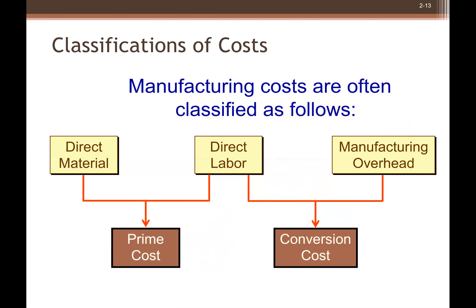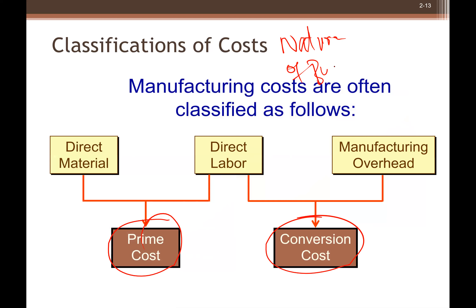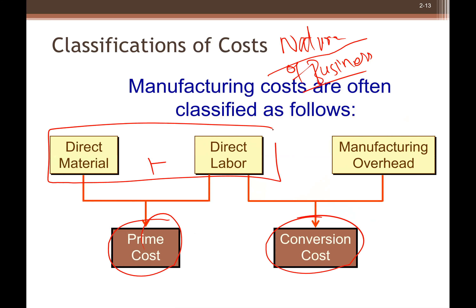To summarize: in manufacturing terms, product cost equals manufacturing cost, and period cost equals non-manufacturing cost. But the real definition is that period costs go directly to the income statement, while product costs affect both the balance sheet and the income statement.